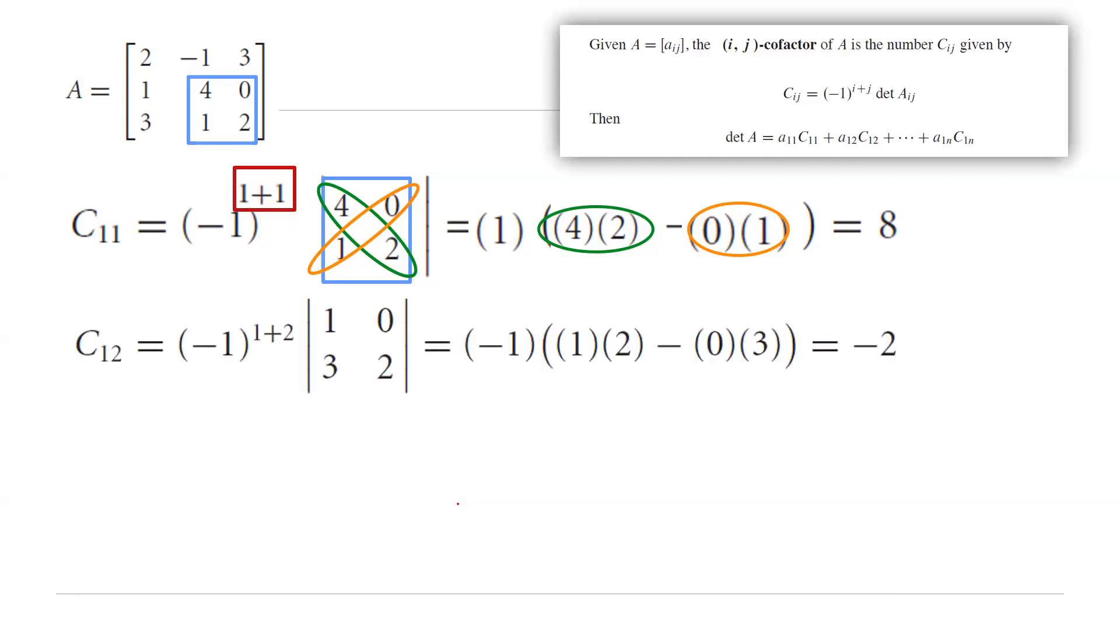With the same argument, you can find the cofactor for the second one, c of 1,2. Then the cofactor for 1,3 is equal to negative 11.